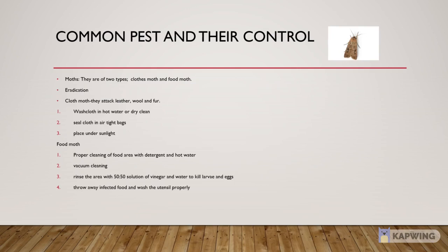The next common pest is Moths. Moths are of two types: cloth moth and food moth. Control methods for cloth moth: Cloth moths may attack leather, wool and fur. 1. It is recommended to wash suspected cloth in hot water or get them dry cleaned. 2. Seal the cloth in airtight bags. 3. Place stored cloth under sunlight after a specific period. Control methods for food moth: 1. Proper cleaning of food area with detergent and hot water. 2. Thorough vacuum cleaning of the suspected area. 3. Rinse the area with a 50-50 solution of vinegar and water to kill larvae and eggs. 4. Throw away infected food and wash utensils properly.